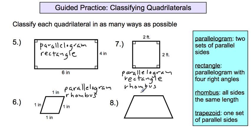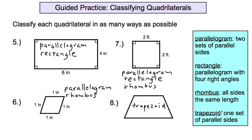And then the fourth shape: being methodical, let's go through each category. Parallelogram? The top is parallel to the bottom, but the sides are not parallel — therefore it is not a parallelogram. Rectangle? It doesn't have any right angles, so it's not a rectangle. Rhombus? The bottom is longer than the top, so it isn't a rhombus. Trapezoid? It has one set of parallel sides — the top and bottom are parallel — so this shape is only a trapezoid.